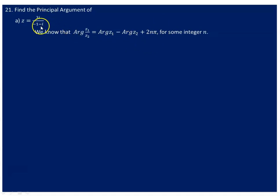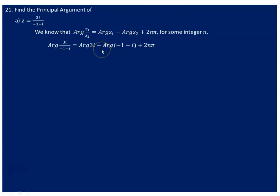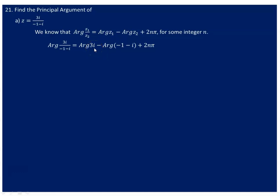The argument of 3i over minus 1 minus i — consider z1 as 3i and z2 as minus 1 minus i. This is going to be the argument of 3i minus the argument of minus 1 minus i plus 2nπ. Now, 3i is nothing but an arrow lying on the y-axis because the real part is 0 and the imaginary part is 3. The angle measured from the positive x-axis up to the y-axis is π over 2. So π over 2 is the principal argument of 3i.